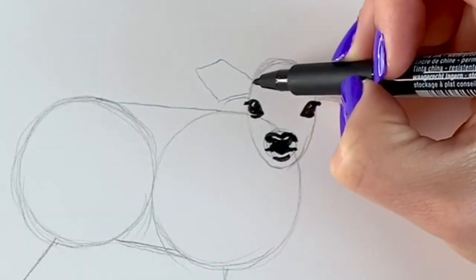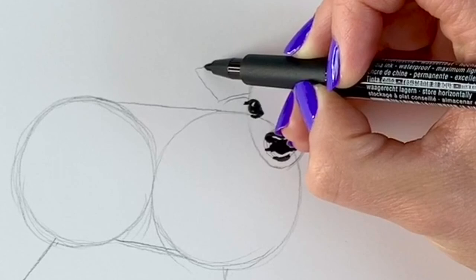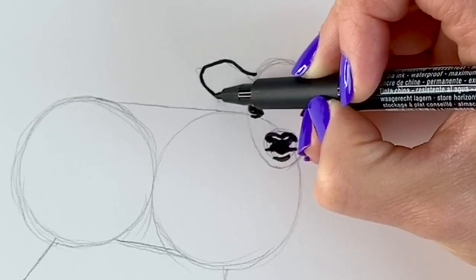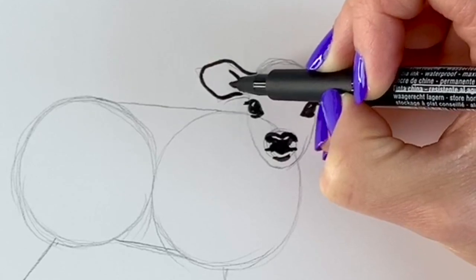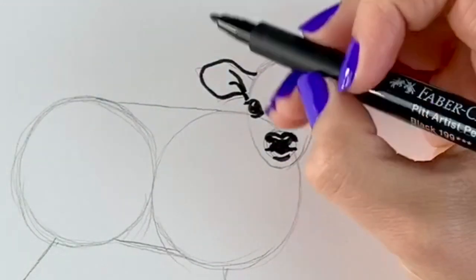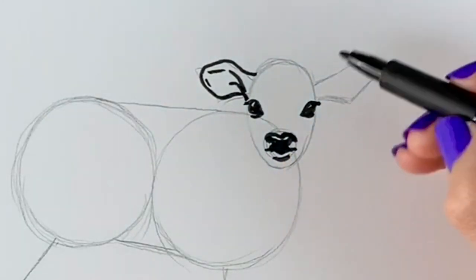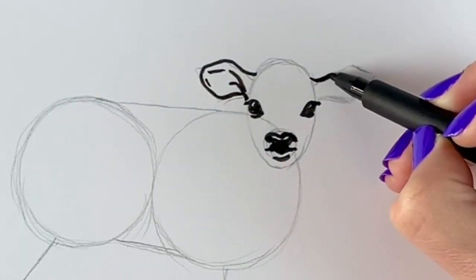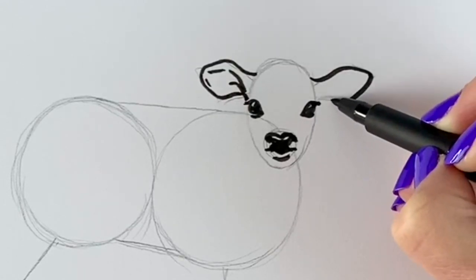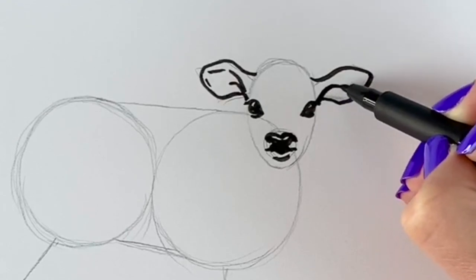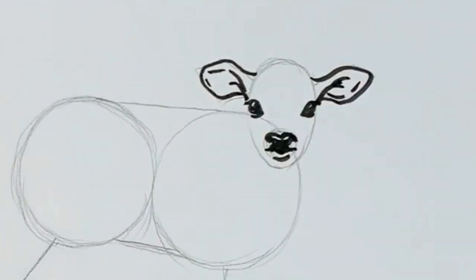I'm now going to draw the ears. So these beautiful big ears. They're not quite as diamond shaped as I made them earlier. Make them look a little bit more realistic. So something like that. Okay. And then I'm going to do the other one. Try and make them the same size. Just like this. And then some lines in the middle.